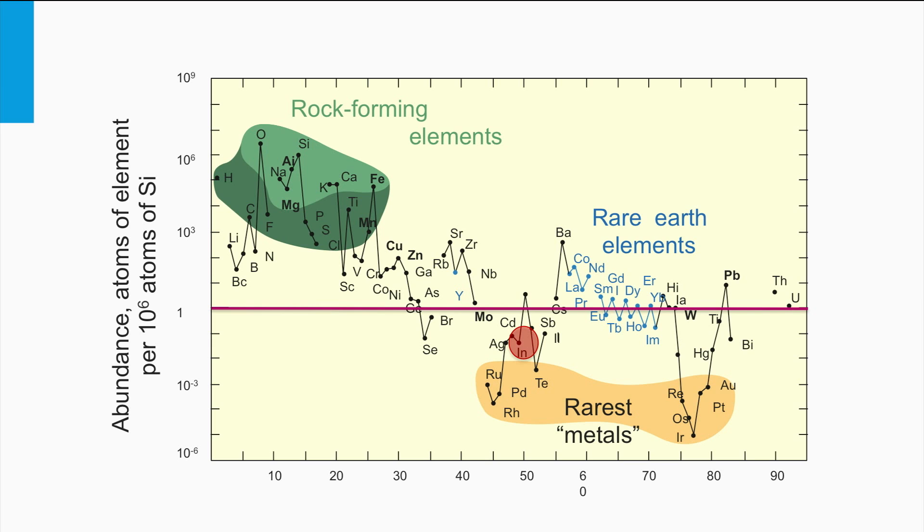As you can see, indium is not a very abundant element, as it lies below the red line. Therefore, indium might be the limiting step to upscale the CIGS PV technology to future terawatt scales.